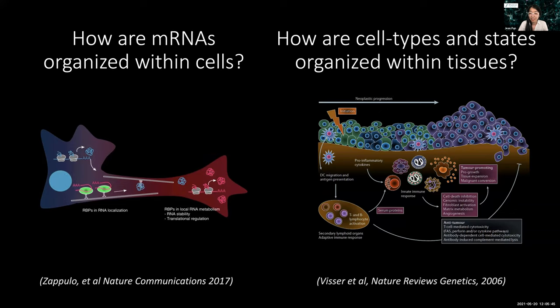Specific questions we're interested in include how mRNAs are organized within cells — of particular interest in highly polarized cell types like the neuron, which must respond to local signals via local translation. We're also interested in how cell types and cell states are organized within tissues, particularly within cancers, where genetically or epigenetically distinct neoplastic populations interact with components of the tumor microenvironment in spatially organized ways.